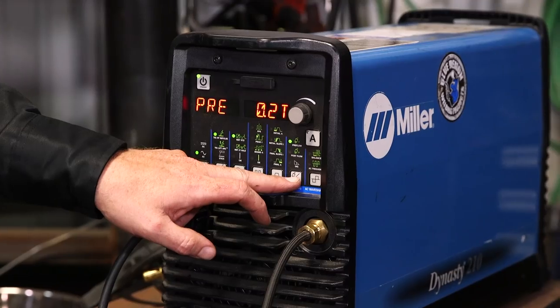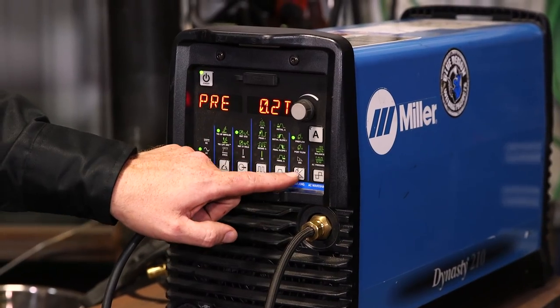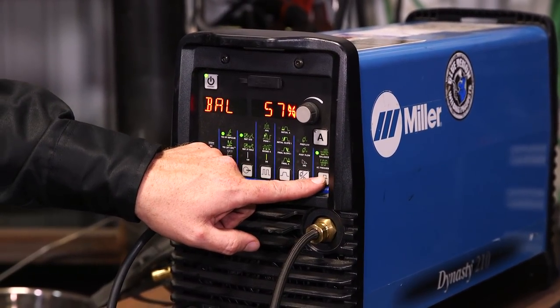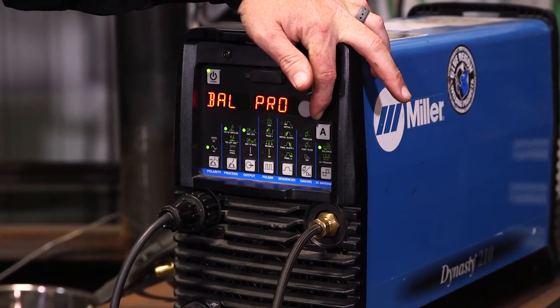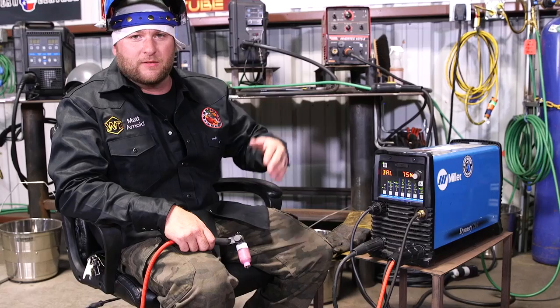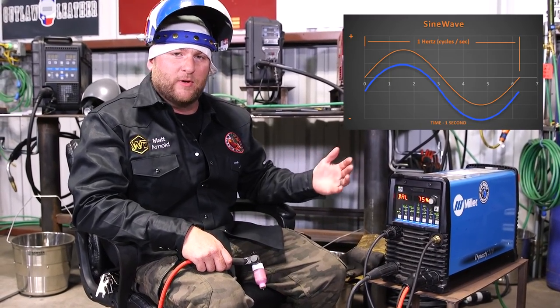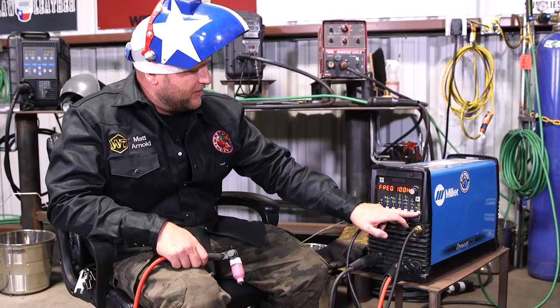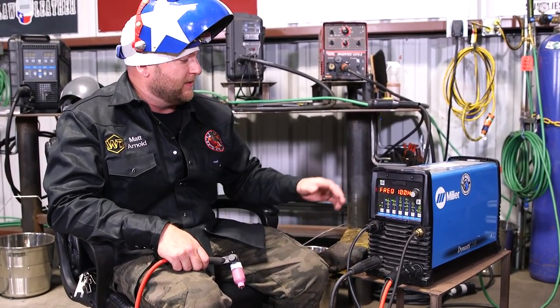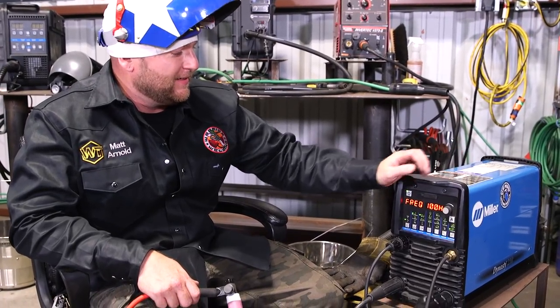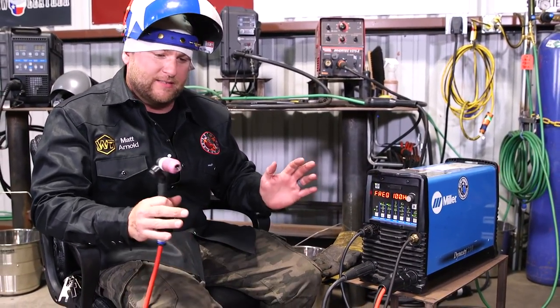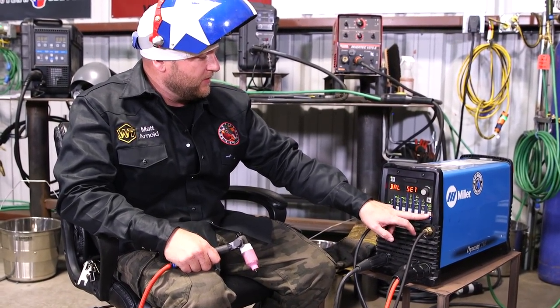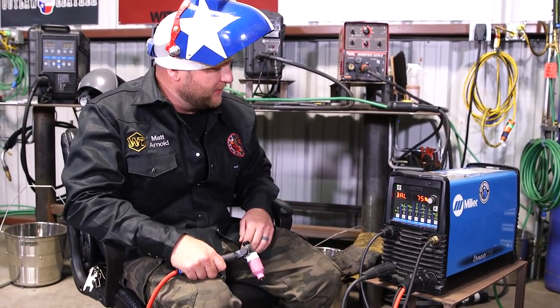We're going to run a 0.2 pre-flow. We're in a big shop, there's wind, there's people moving around, so I have a little bit of gas out of the gate and a 10 second post flow, pretty normal. I'm just going to leave it on the pro setting of a 75% balance. So on our wave balance, we're going to be 75% on the negative side and 25% on the positive side of the wave. Pretty standard.